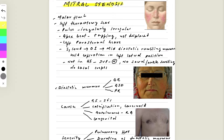Hello, dear doctors. Today we're going to discuss the PACES cardiology station, specifically mitral stenosis. This depends on where you're taking your MRCP PACES exams. If you're taking your exams in the UK, it's very less likely you'll come across mitral stenosis, but if you're taking your exam in international centres like Asia, mitral stenosis can appear in the cardiology station.